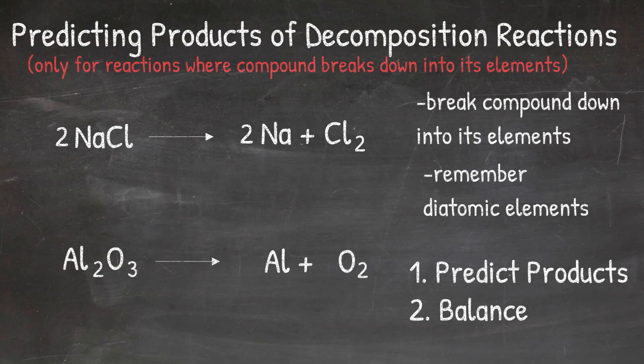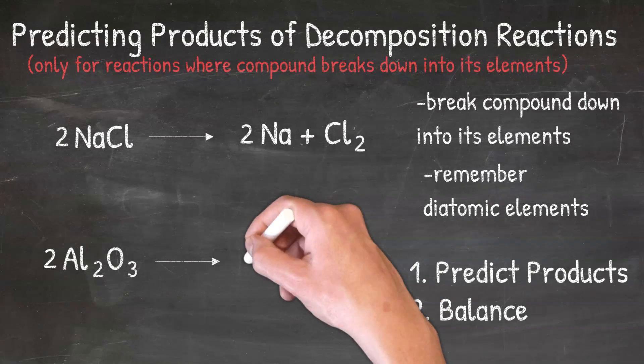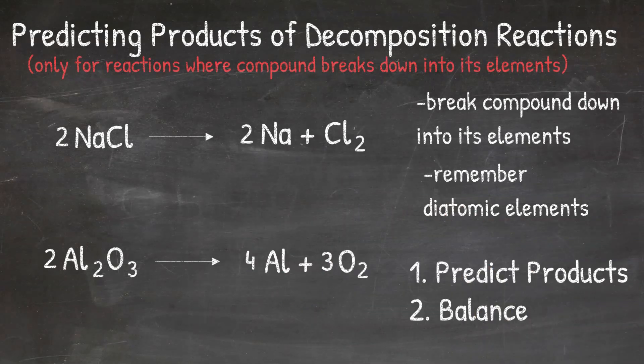Now that I have my products of Al and O2, I can go back and balance this chemical reaction by putting a 2 in front of Al2O3, a 4 in front of Al, and a 3 in front of O2.